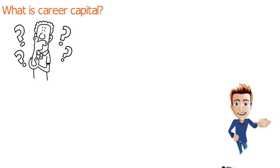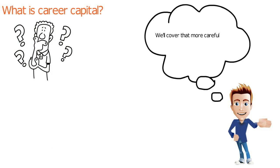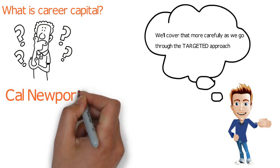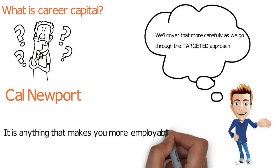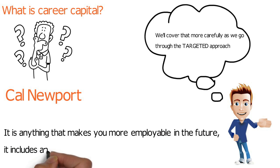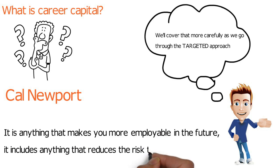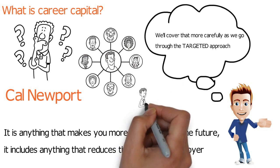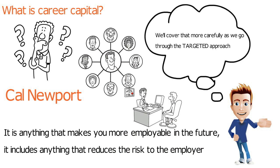We'll cover that more carefully as we go through the targeted approach. But basically, it is a concept that Cal Newport termed. It is anything that makes you more employable in the future. It includes anything that reduces the risk to the employer, such as having a network or the right experience. It is not actually the experience they necessarily want, but it is an indicator that you can do the job.